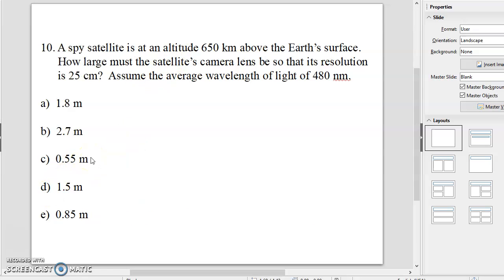Number ten. A spy satellite is at an altitude of 650 kilometers above the Earth's surface. How large must the satellite's camera lens be so that its resolution is 25 centimeters? Assume the average wavelength of light is 480 nanometers. And utilizing that one right there, the answer, of course, is D, 1.5 meters. Of course, ours are much better than that.